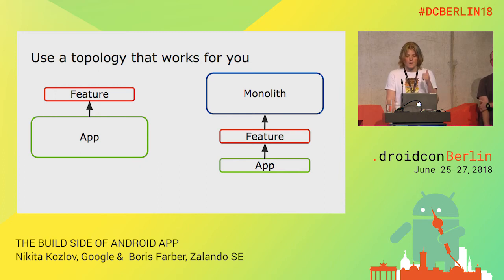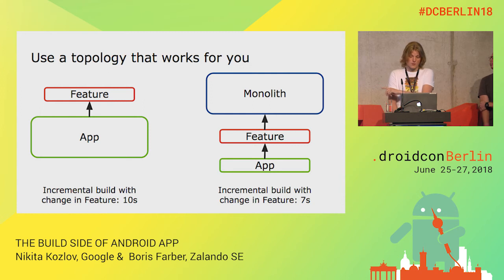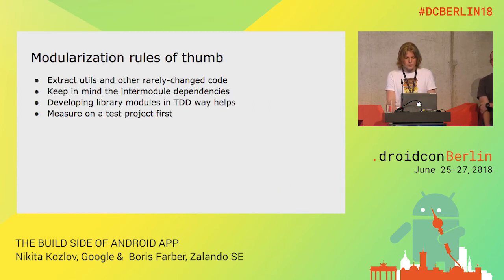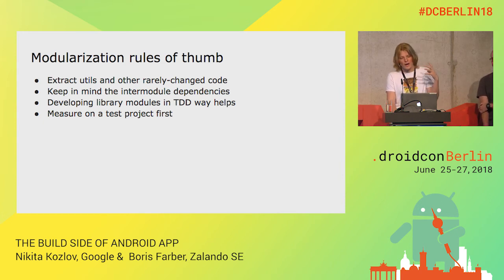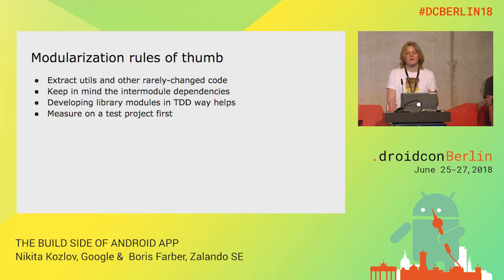If you don't have dedicated time or people to ensure this work gets done, you might end up extracting half a feature and then moving on to the next project — and that's probably not what you want. Another small benefit is that if you are working against a feature module, it will be faster on the right configuration. So to recap: extract utilities and rarely changed modules, keep in mind that inter-module dependencies add to build time, and if you are working in a TDD way, that's great.